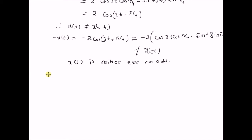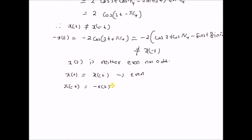So, in order to check whether a signal is even, odd, or neither, you have to check whether x(t) equals x(−t) — this means the function is even. And if x(−t) equals −x(t), that means the function is odd. Let us look at another example.